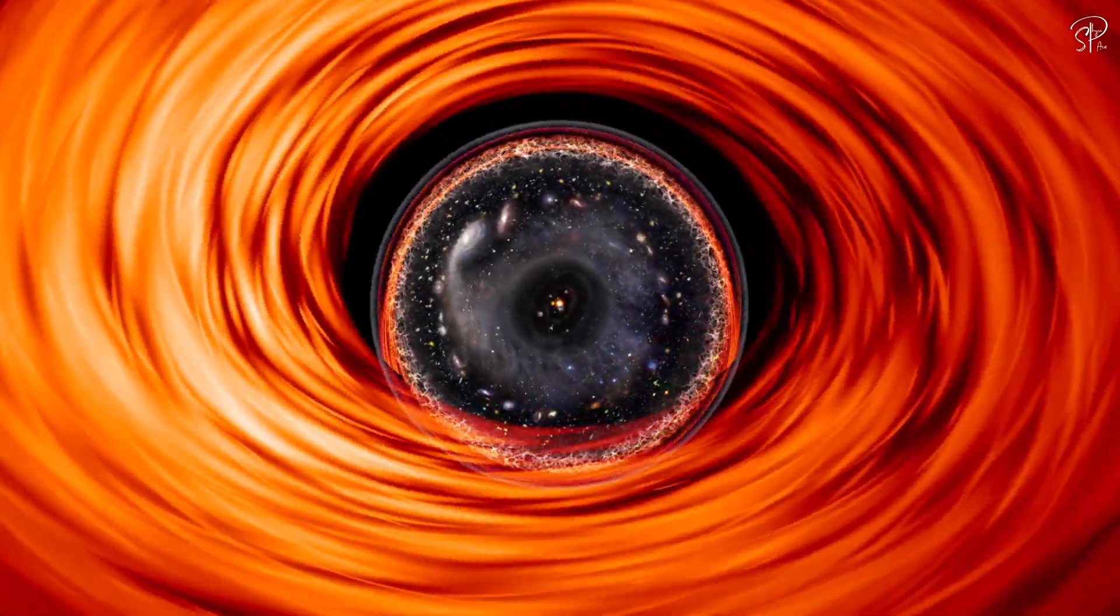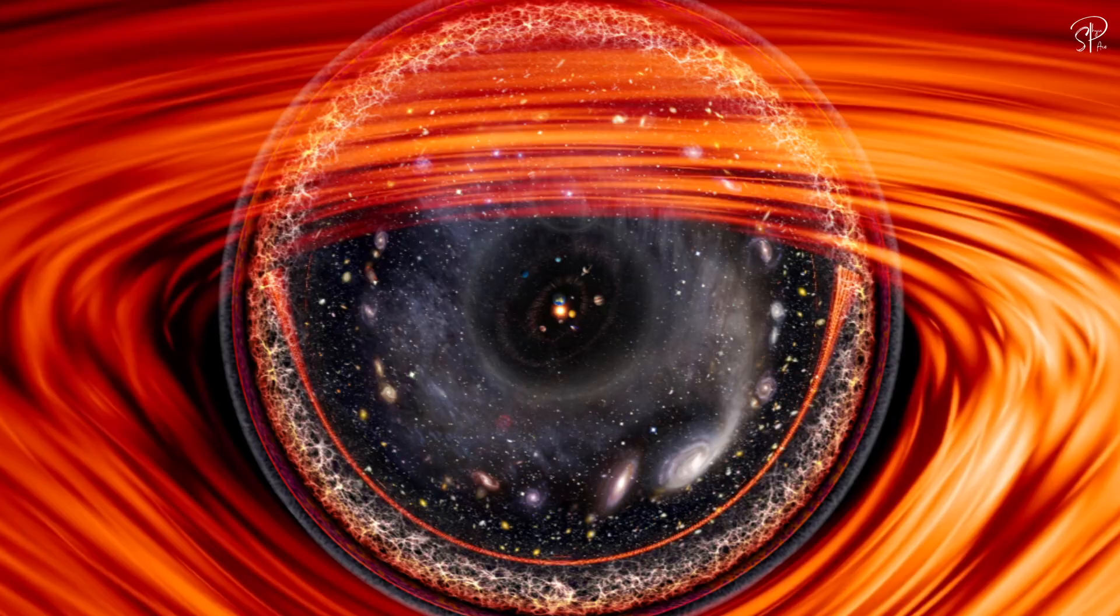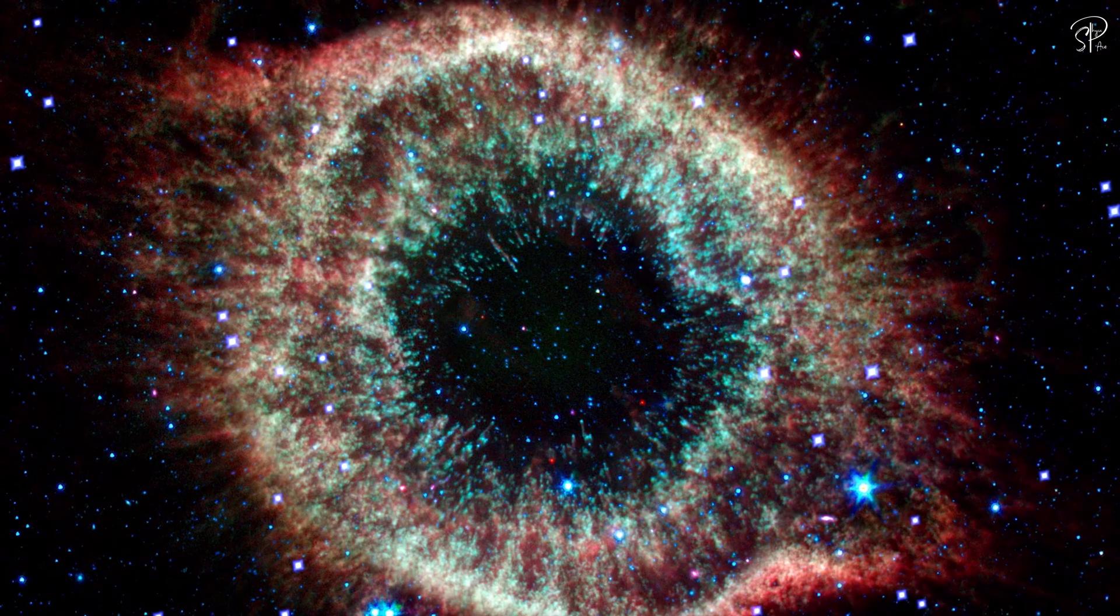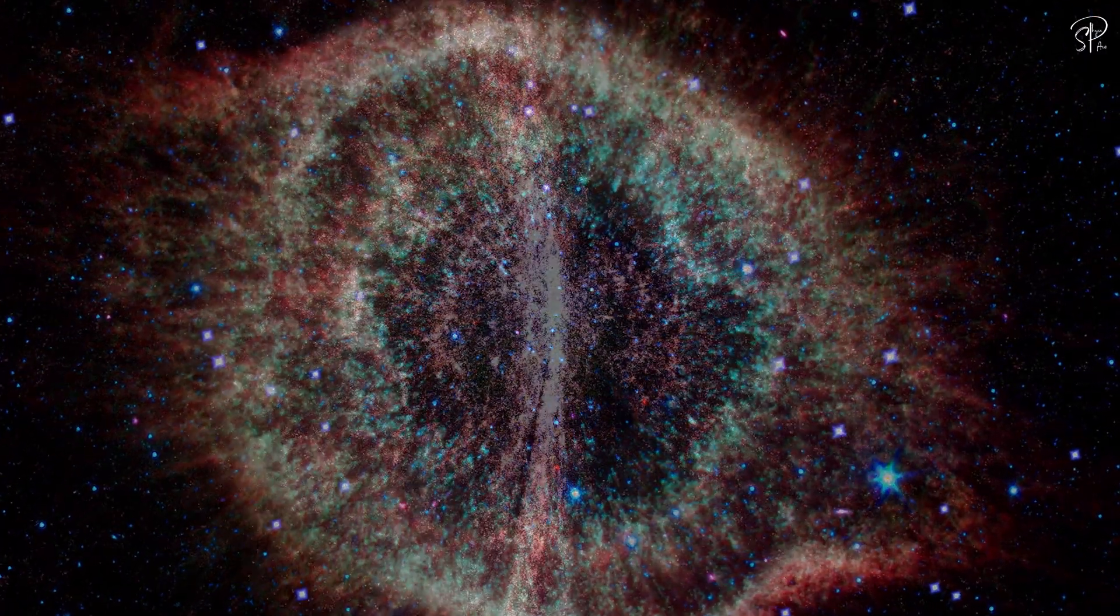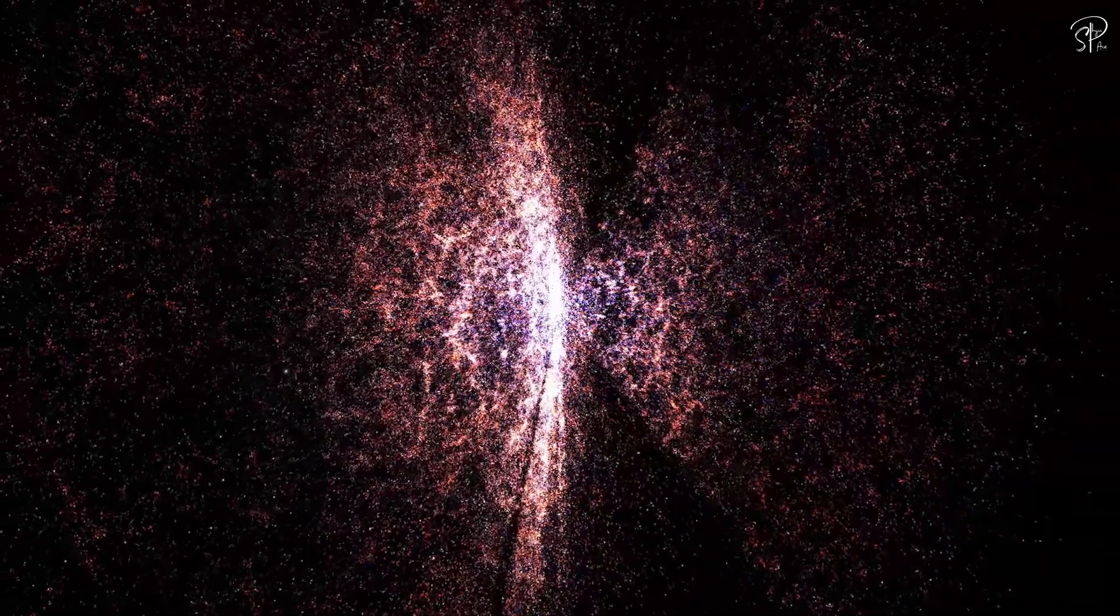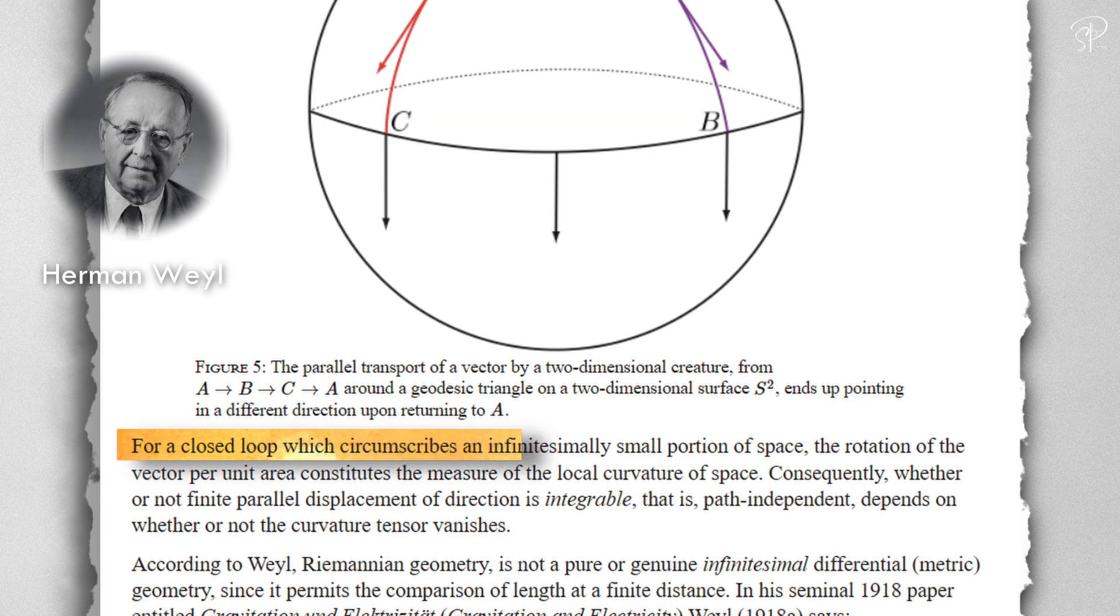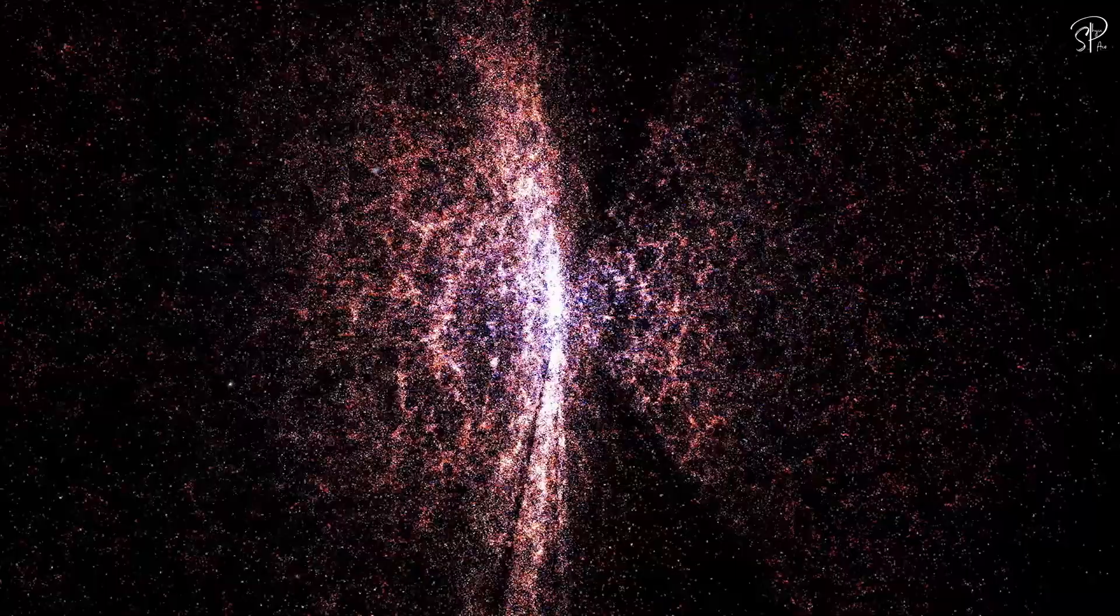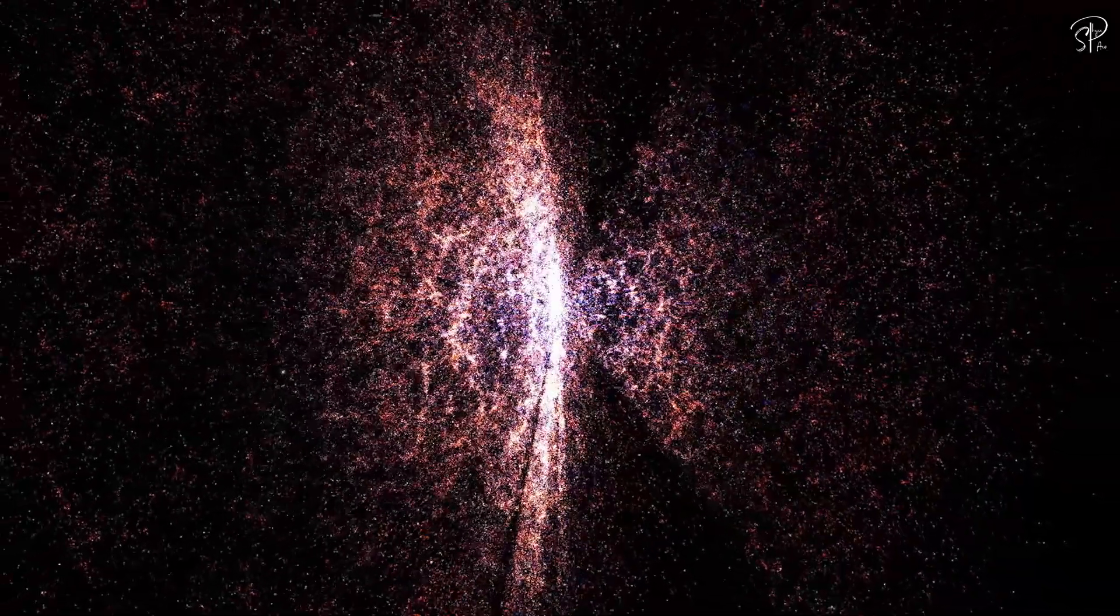The idea that our universe might be inside a black hole is a relatively new one, with the first serious proposal appearing in the 1990s. However, there are some earlier ideas that could have been seen as precursors of this theory. For example, in the 1920s, Herman Weil proposed that the universe might be a closed, finite space, and in the 1930s, Arthur Eddington suggested that the universe might be a sphere of annihilating matter.